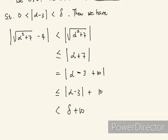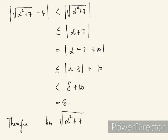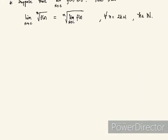So this is less than delta plus 10. And so now I know what my delta is. My delta is epsilon minus 10, so that this will be equal to epsilon. So we have proven the claim. Therefore, the limit of the square root of alpha squared plus 7 as alpha approaches 3 is 4.